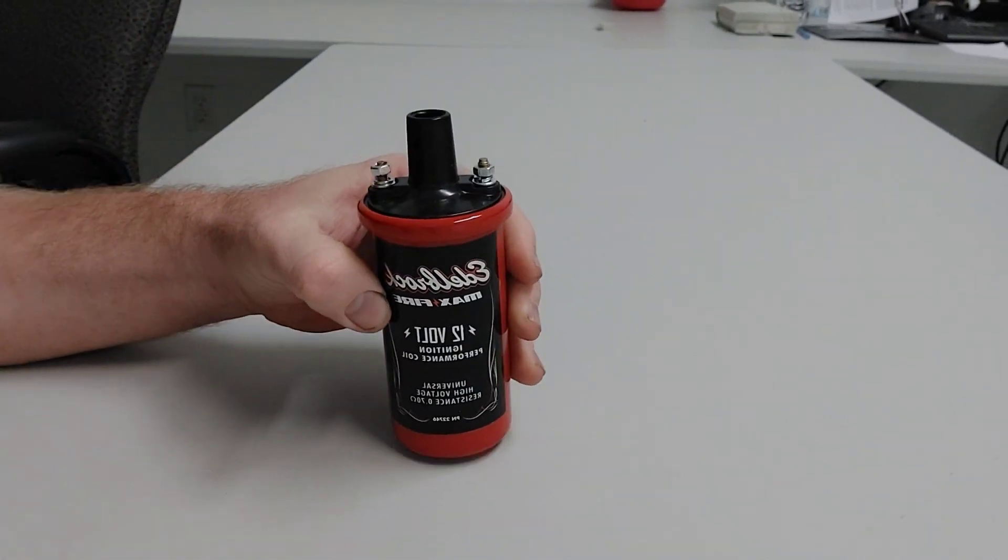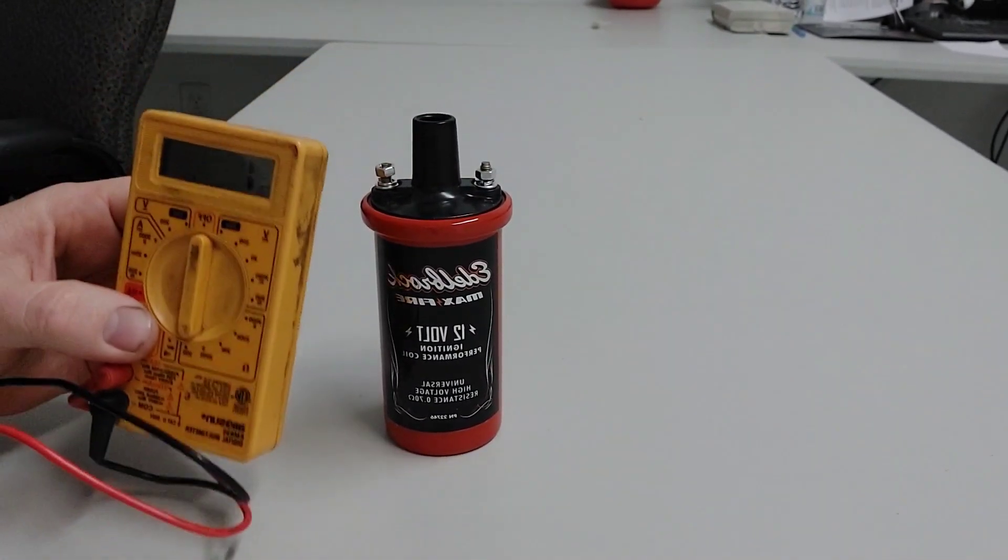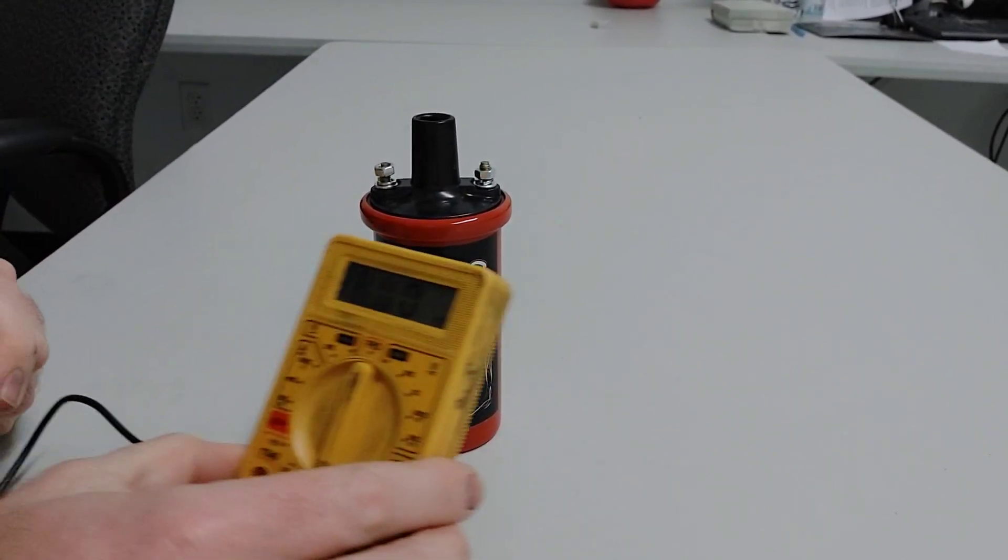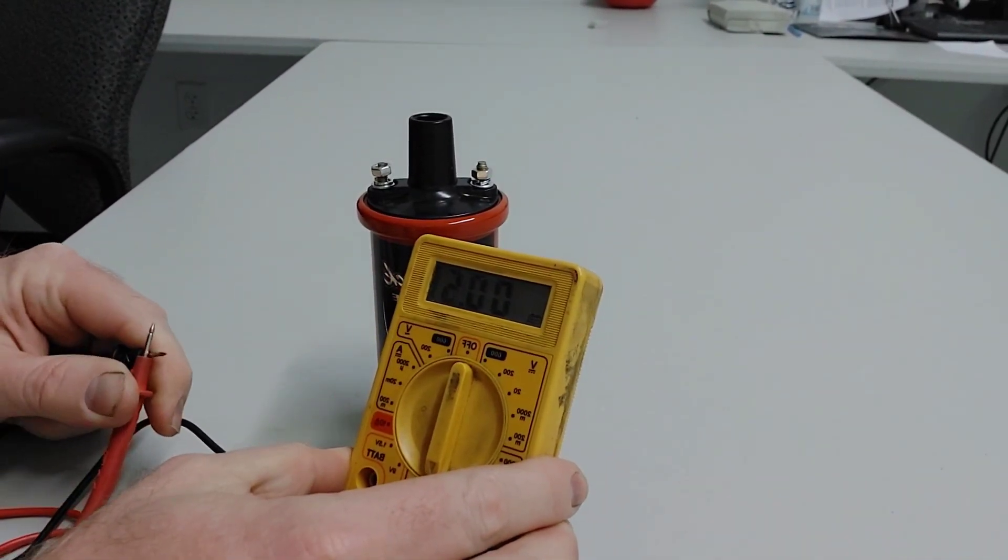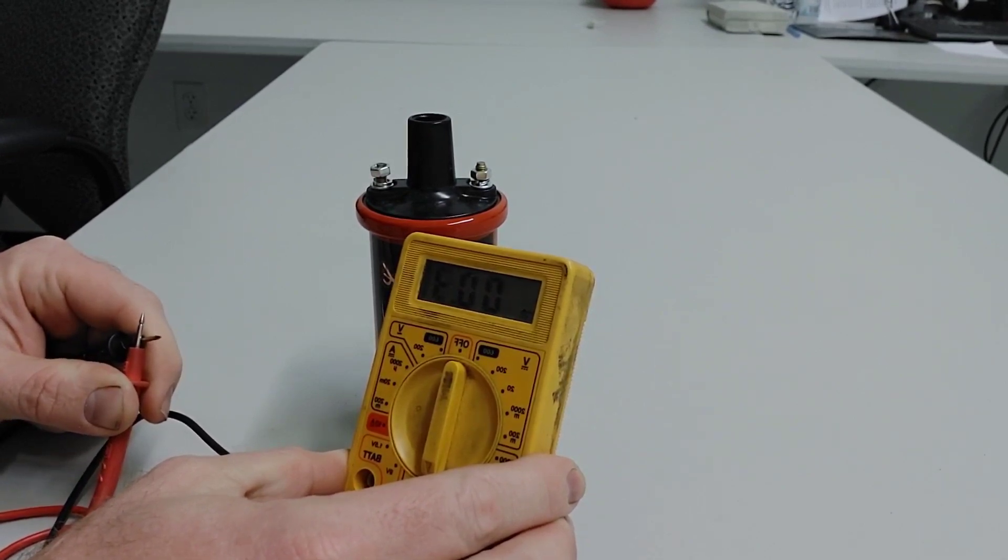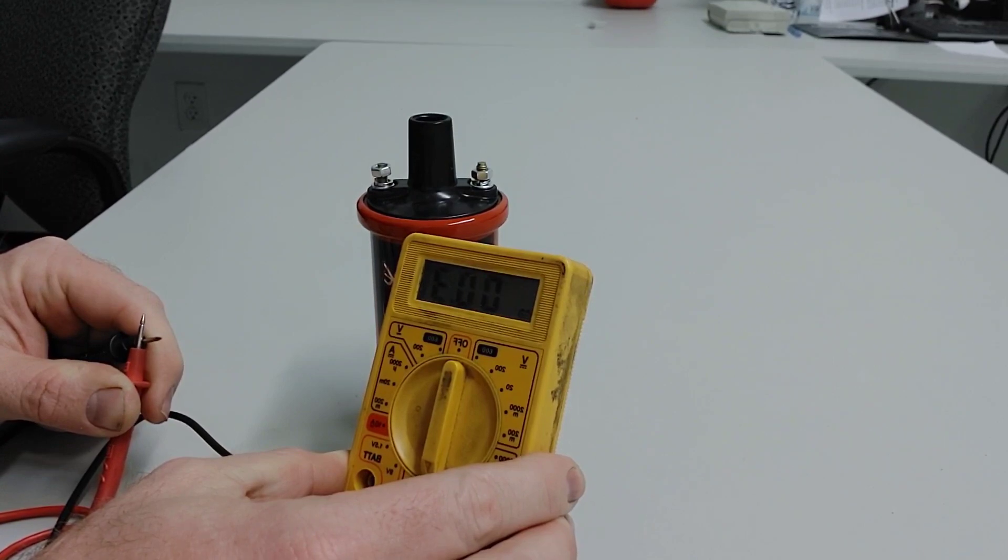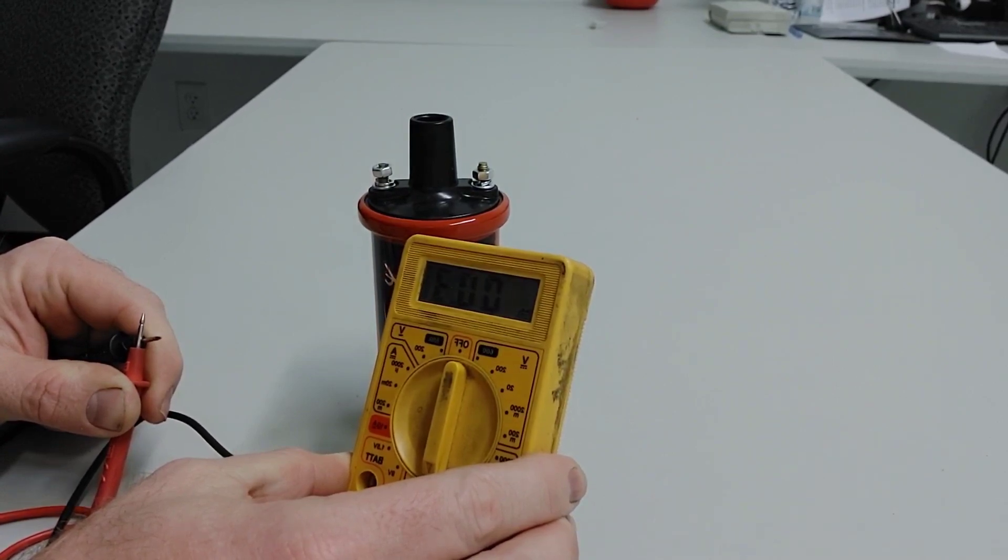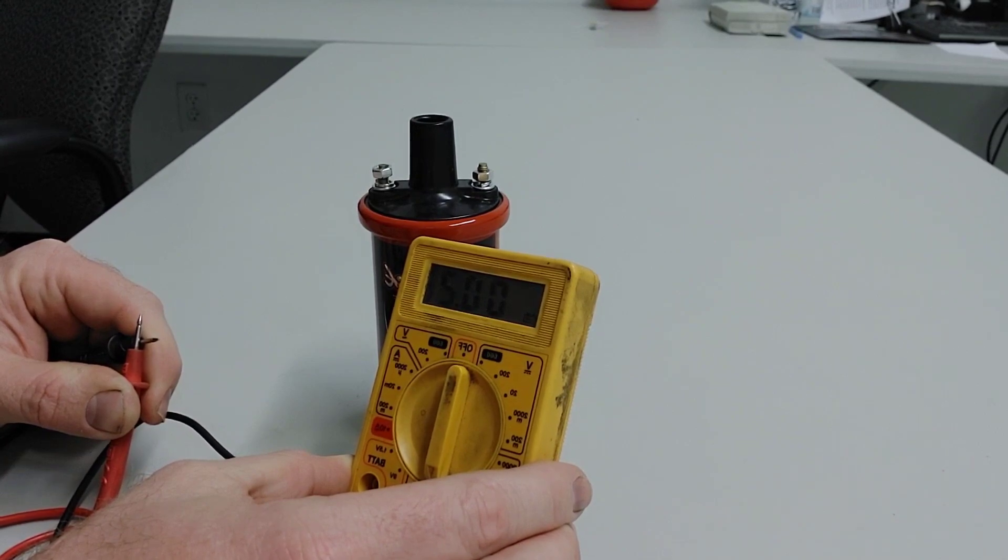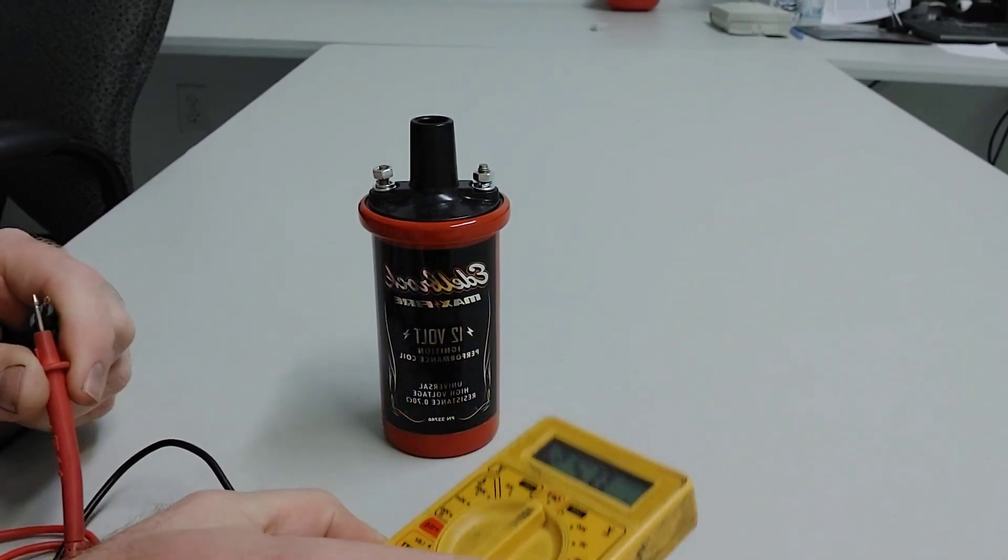The first thing you do with your multimeter is touch the negative and positive leads together to calibrate it. I'm sitting at 0.3 ohms. This one can't be calibrated since I don't have a button on it, so you just have to remember to subtract the 0.3 from your first reading.